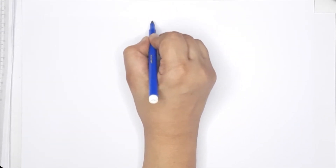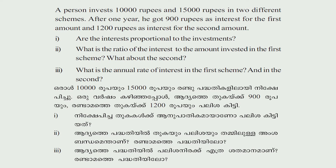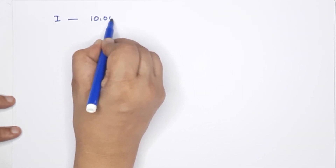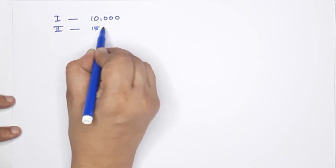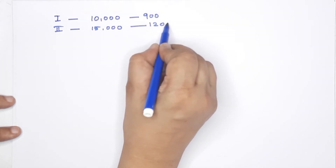Page number 182, first question: A person invests 10,000 rupees and 15,000 rupees in two different schemes. After one year, he got 900 rupees as interest for the first amount and 1,200 rupees as interest for the second amount. Are the interests proportional to the investment? What is the ratio of interest to the amount in each scheme? What is the annual rate of interest in each scheme?